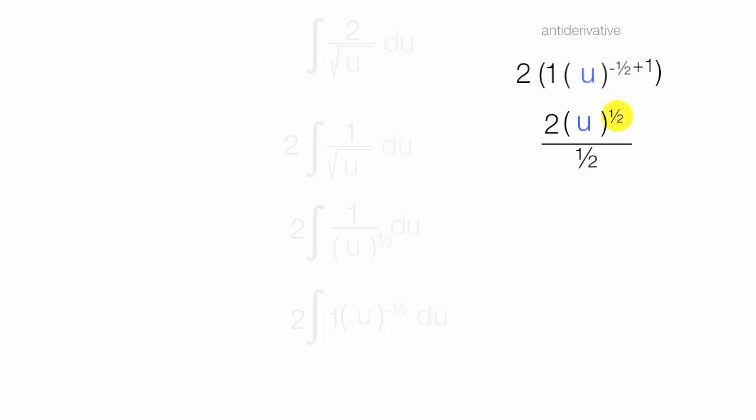2 divided by 1 half. 2 divided by 1 half is 4. Now I have 4 times u to the 1 half power.